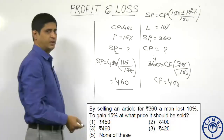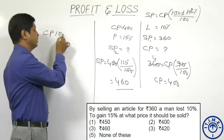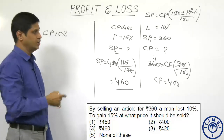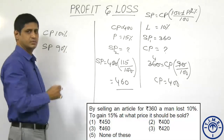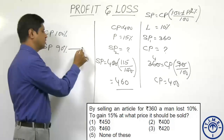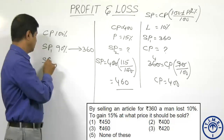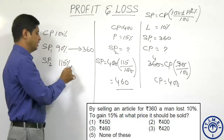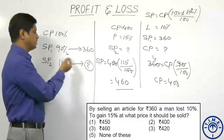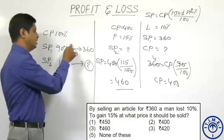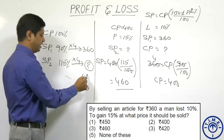The same question can be answered another way. Assuming cost price as 100 percent, a 10 percent loss means the selling price is 90 percent of the cost price. The 90 percent value is given as ₹360. He wants to make a profit of 15 percent, so the selling price equals 115 percent of cost price. Observing the relation: 4 times 90 is 360, hence 4 times 115 is 460.